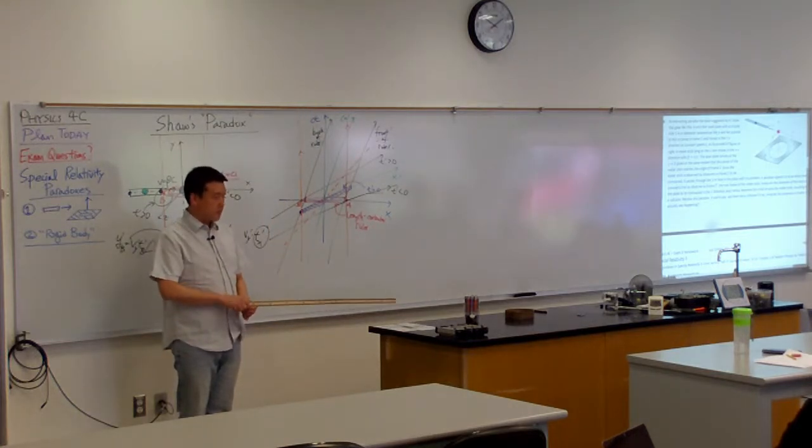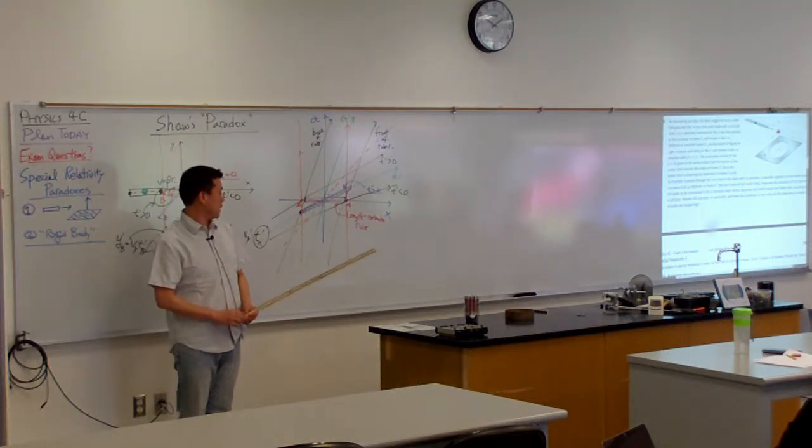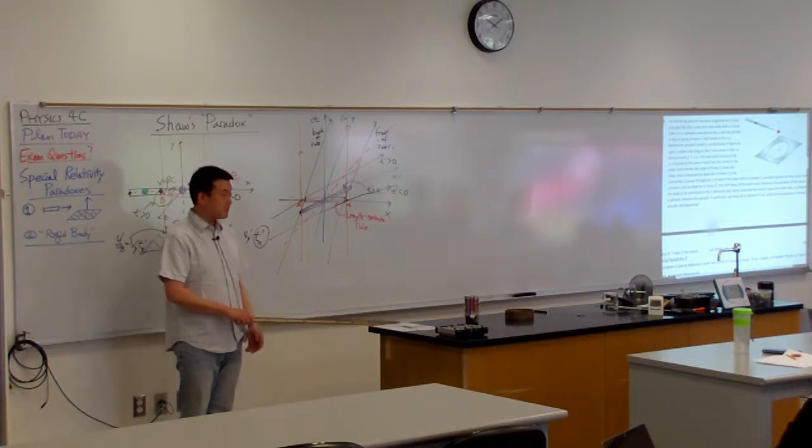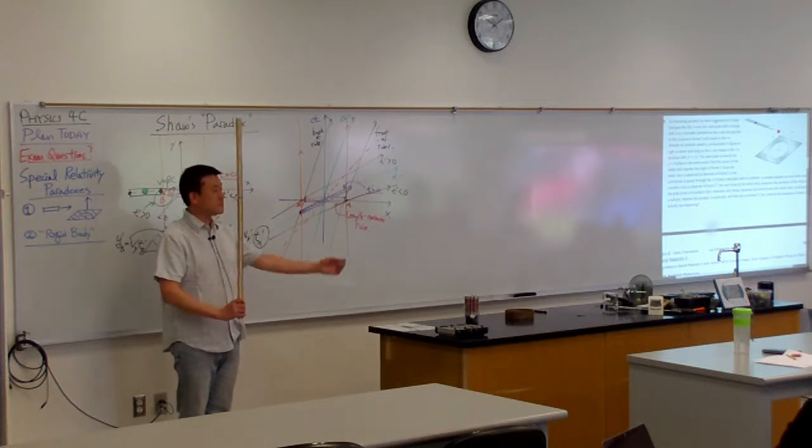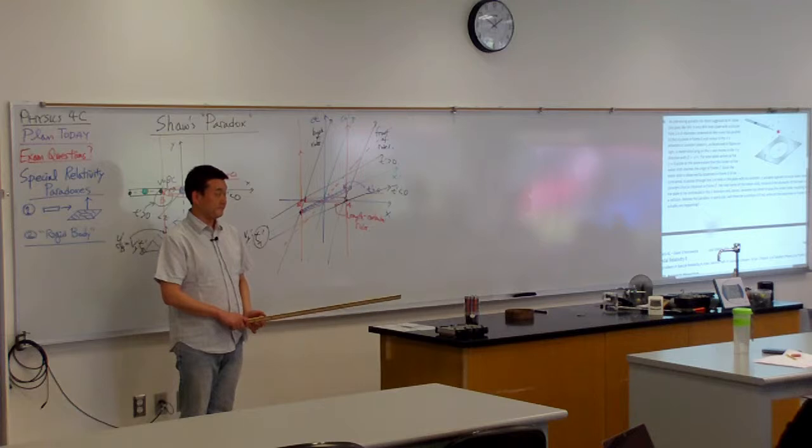Now, can you imagine me holding a ruler that's 300 million meters long, 3 times 10 to the 8 meters, and then spinning it at the same speed of one radian per second? What's the speed of the endpoint? Speed of light.